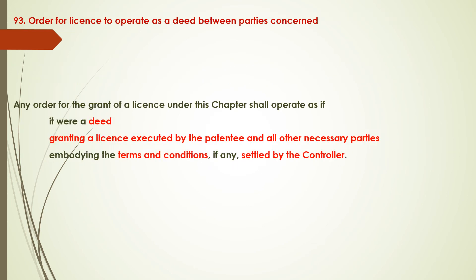Section 93: Order for License to Operate as a Deed Between Parties Concerned. Any order for the grant of a license shall operate as if it were a deed granting the license, executed by the patentee and all other necessary parties, on the terms and conditions settled by the controller.